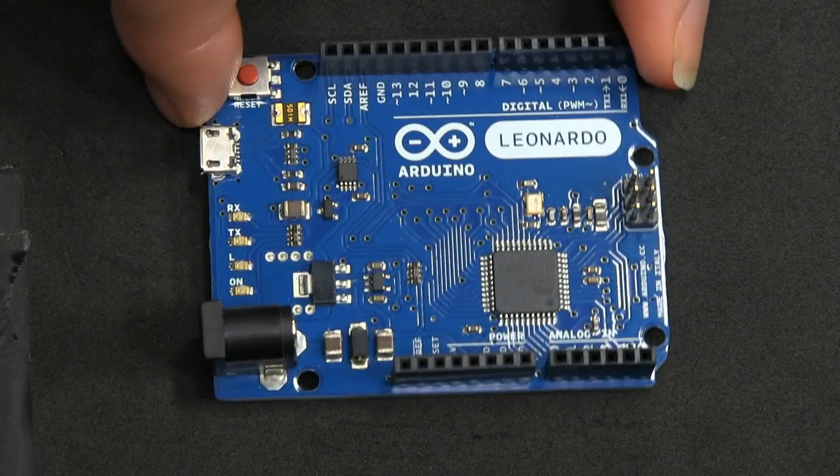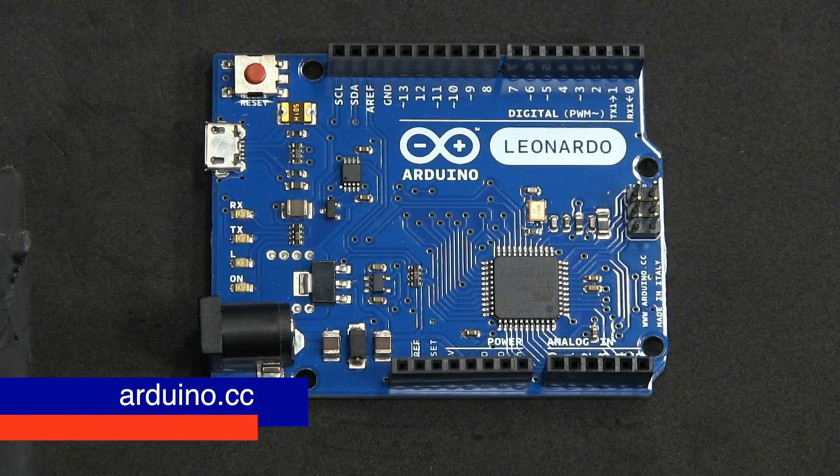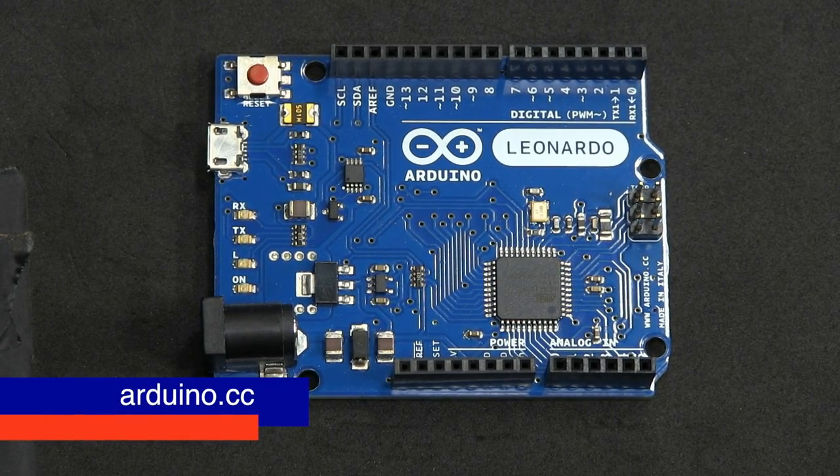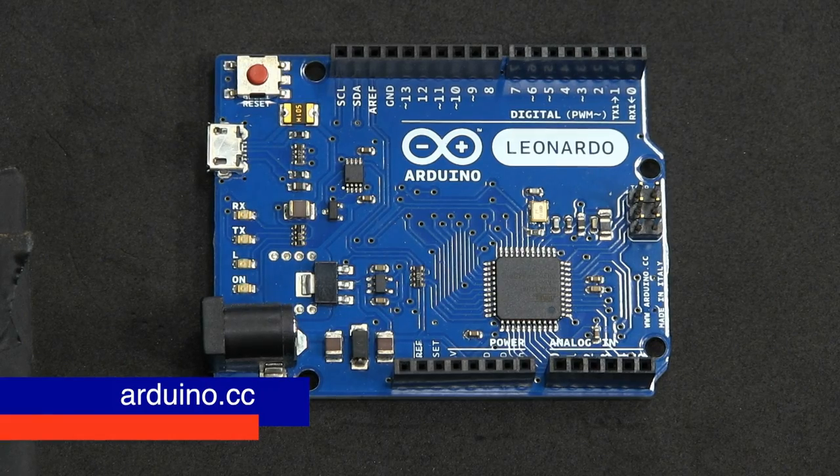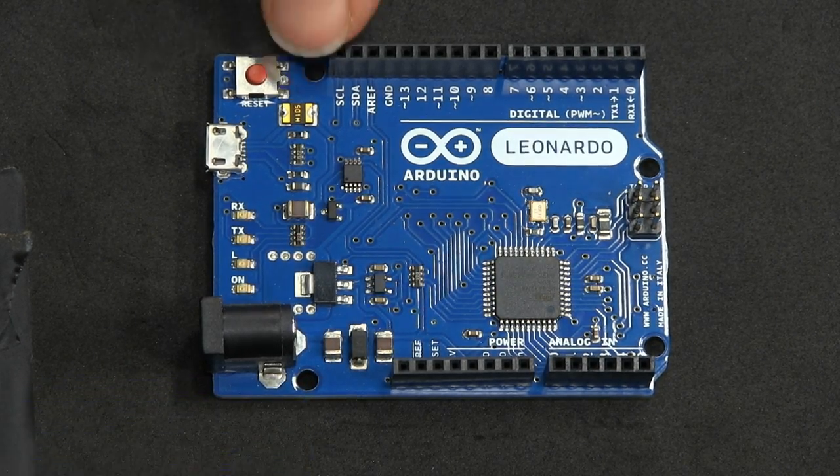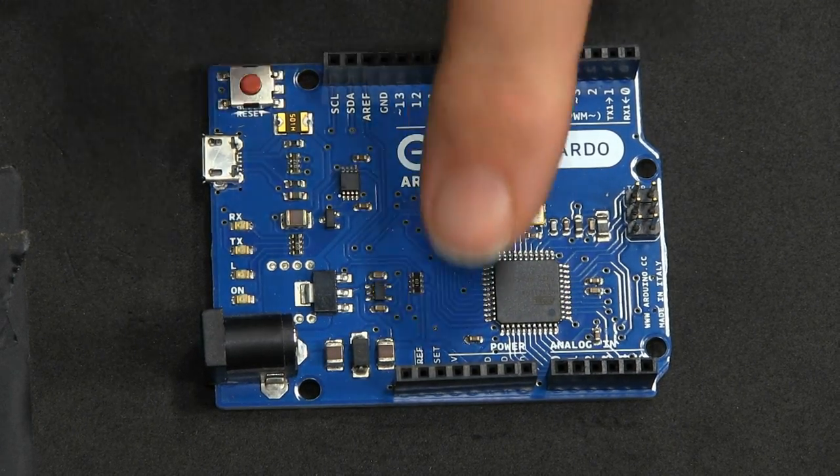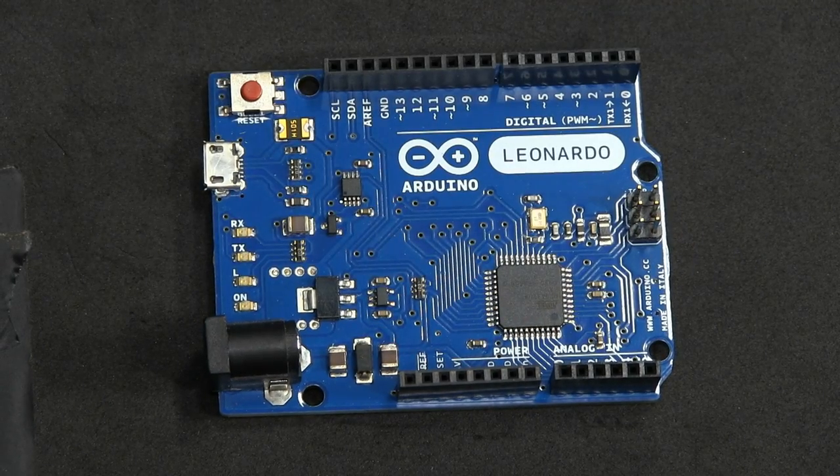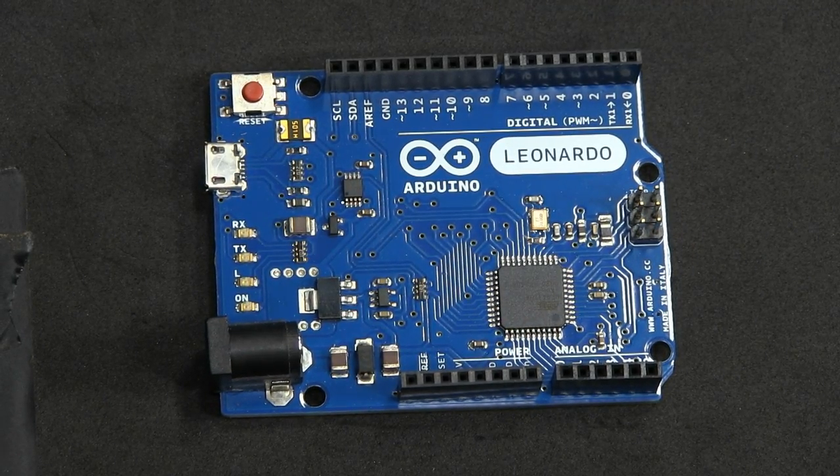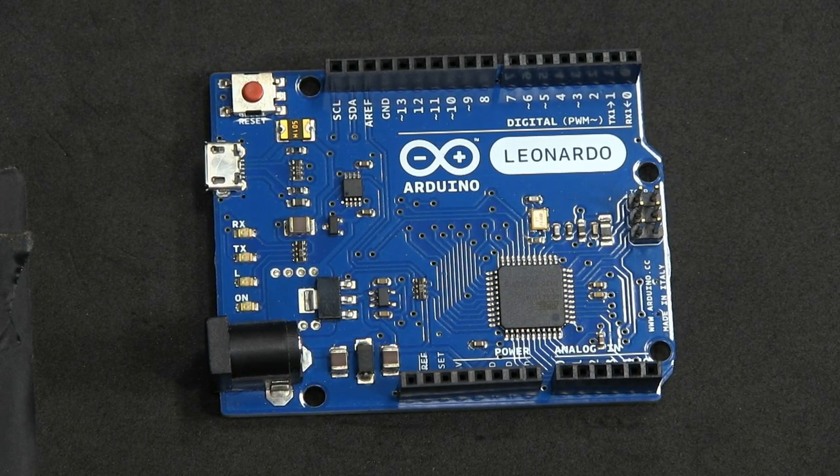Now the Leonardo is one of the more recent boards. It's only been out about six months and we're recording this towards the end of 2012. The important things about it are these two rows of connectors. One at the top of the board here and the other at the bottom of the board. And this allows you to connect analog and digital signals to the controller.